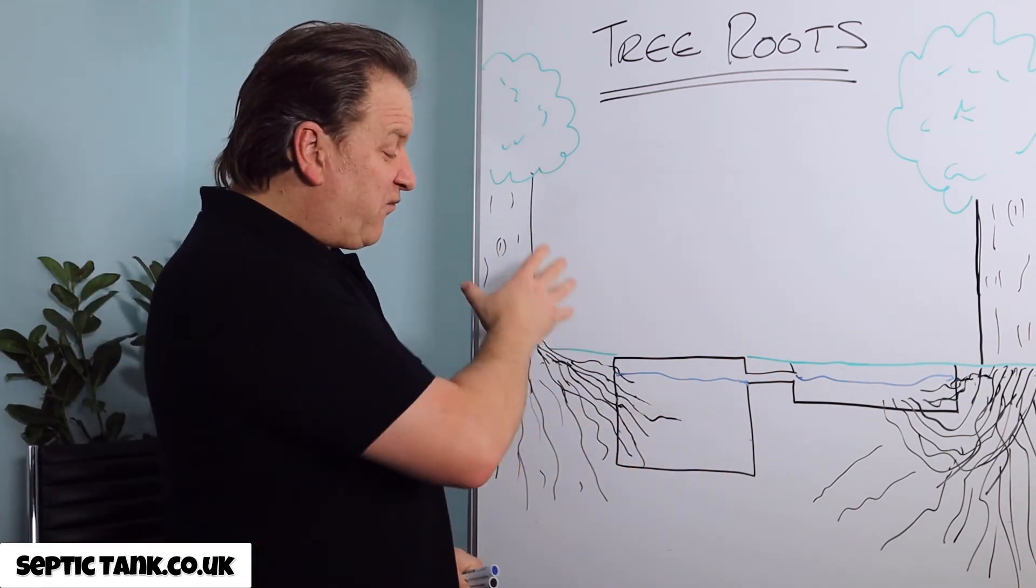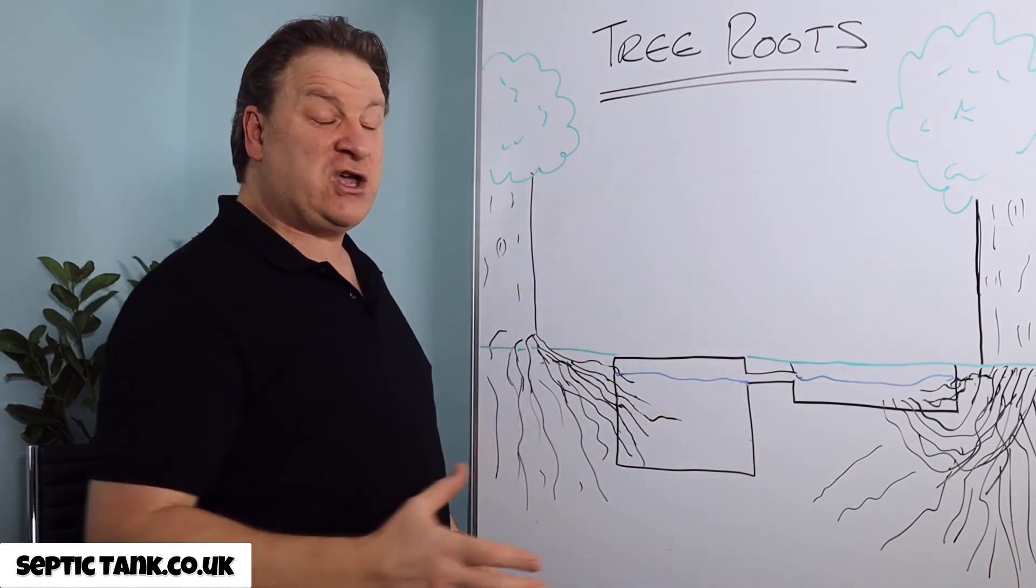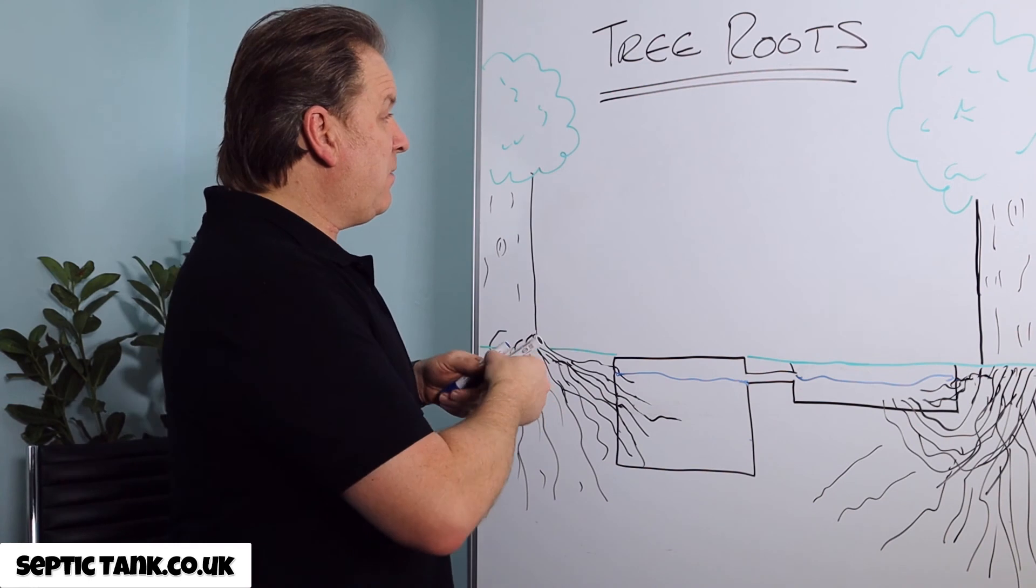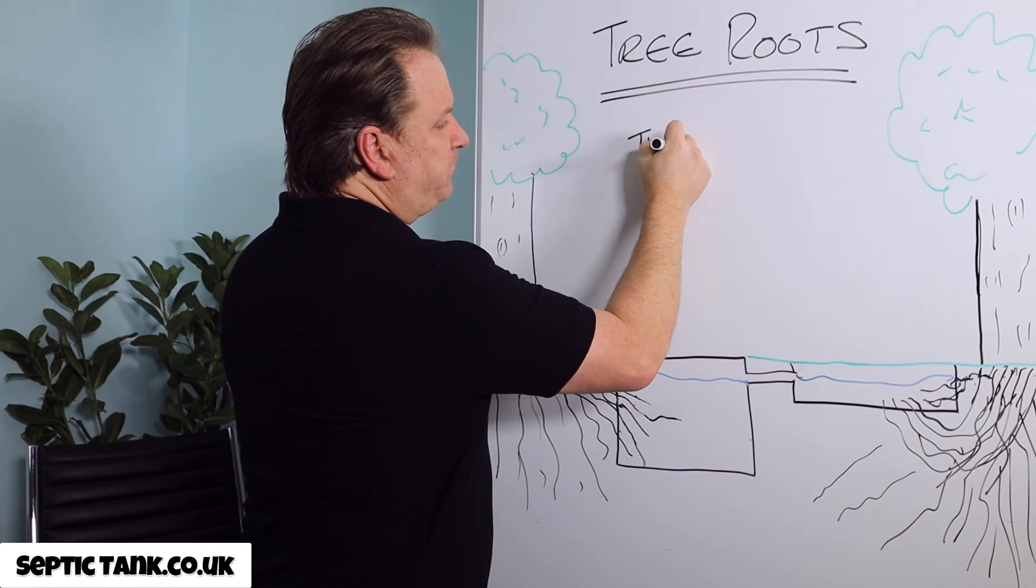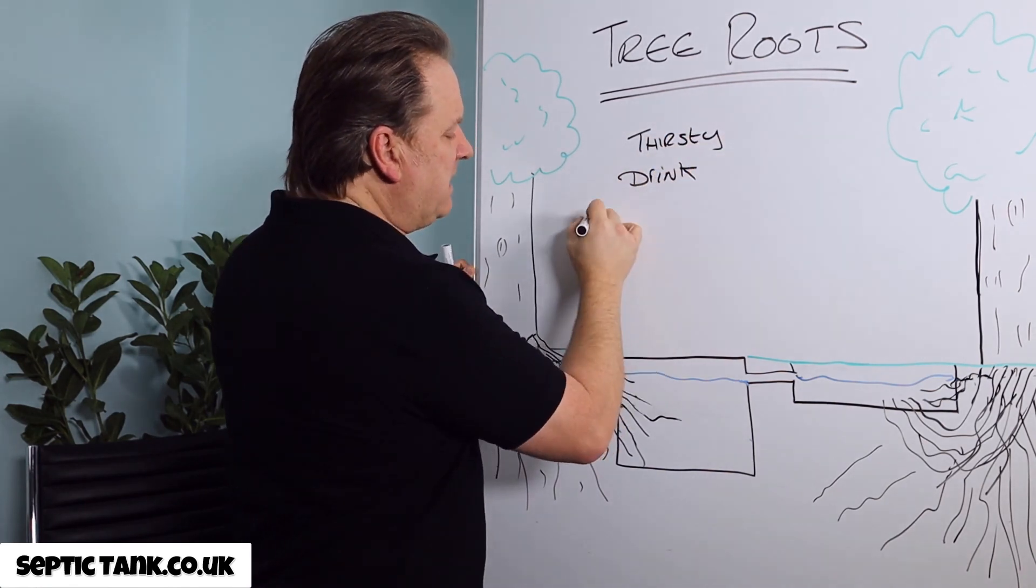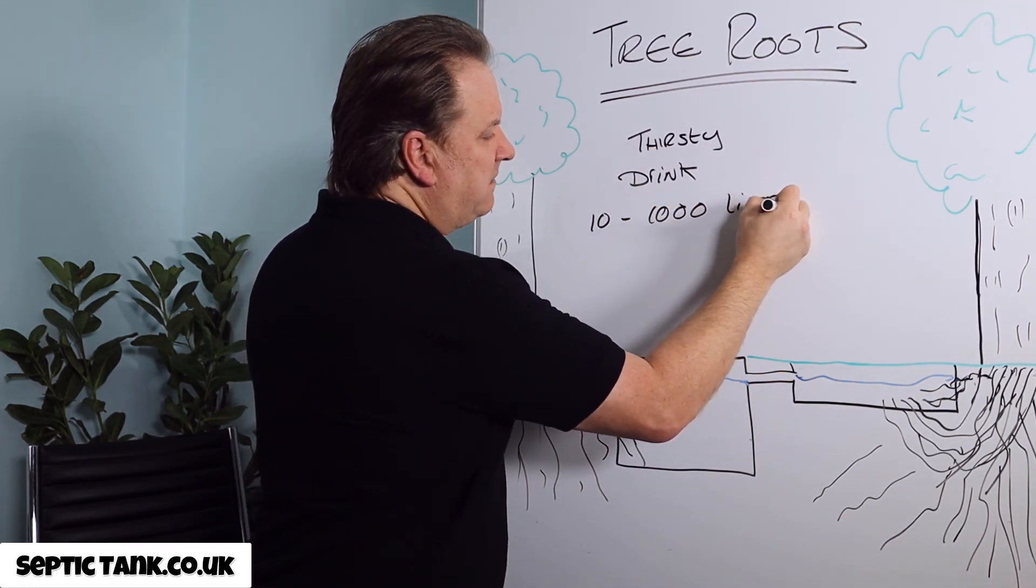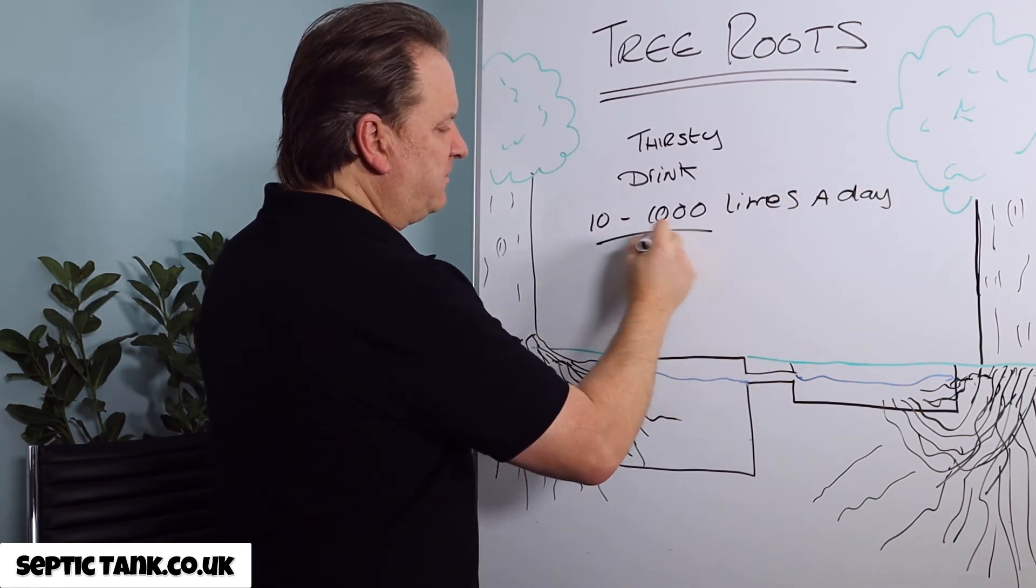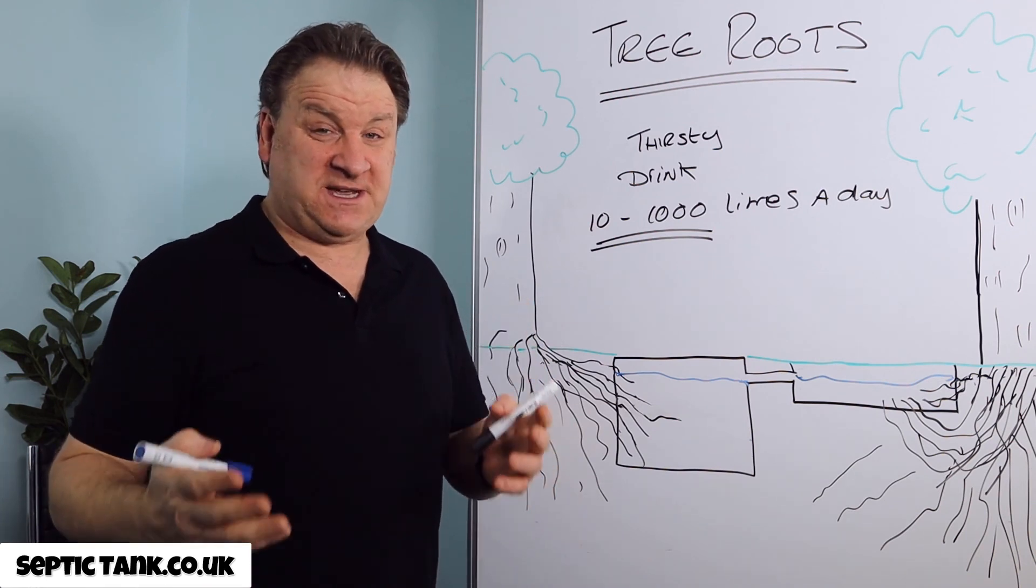The pros of having trees and tree roots and shrubs near your drainage field. Well, let me show you. Trees, like humans, are very thirsty things. Humans drink about eight liters a day. Now a tree, trees are very thirsty and they drink anywhere from 10 to 1000 liters a day. Now just think about that for a second. They drink 1000 liters of liquid a day. They're very, very thirsty things.